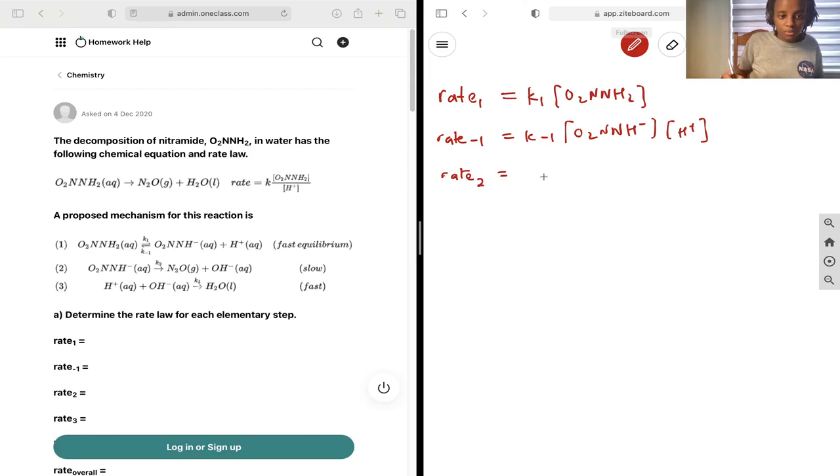Rate 2 is going to be equal to k2 by the reactant that we have in that equation, which is O2NNH minus.